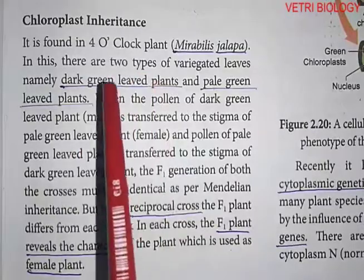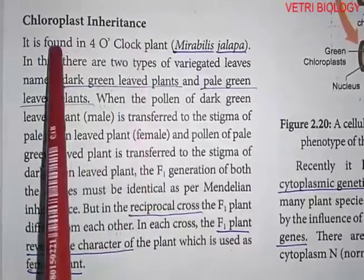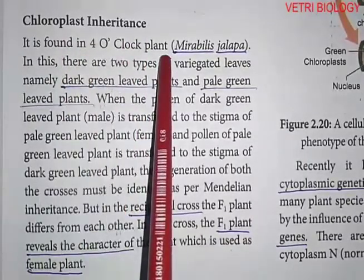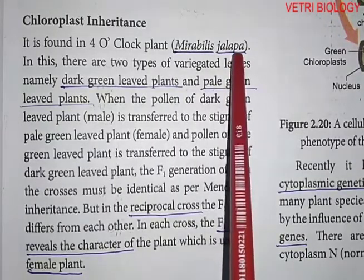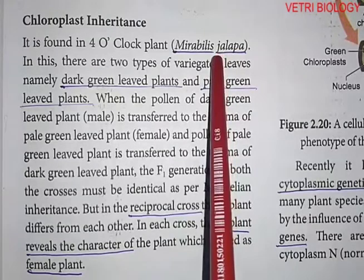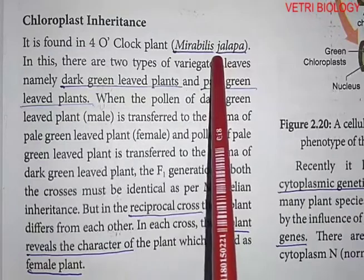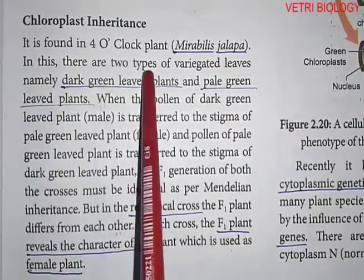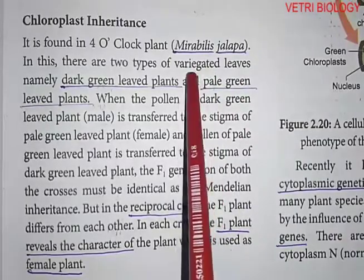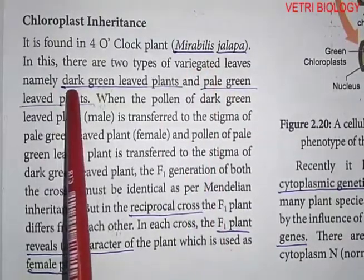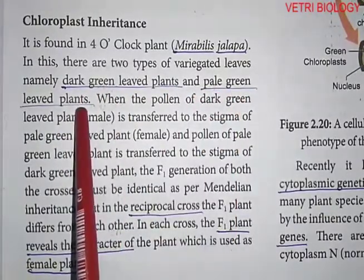We are going to see inheritance in chloroplasts and mitochondria. Firstly, chloroplast inheritance — it is found in the 4 o'clock plant, Mirabilis jalapa (known as Andhimandhar in Tamil). We have already studied this plant in incomplete dominance. In this plant, there are two types of variegated leaves: dark green leaved plants and pale green leaved plants.